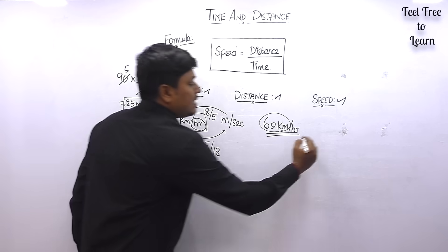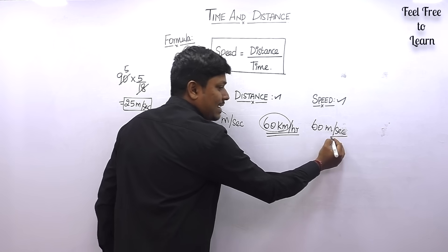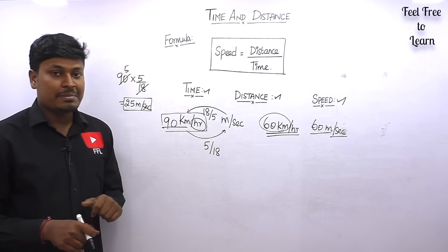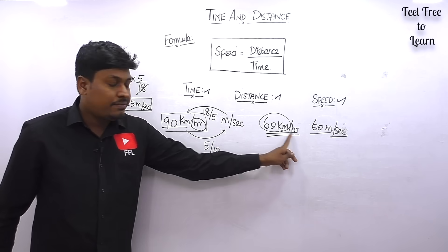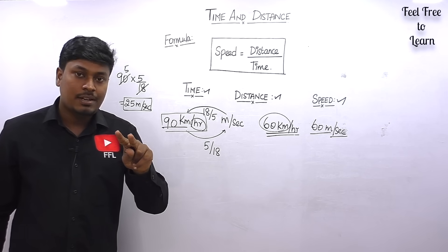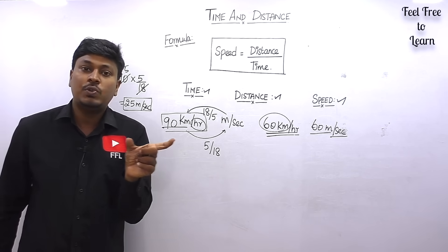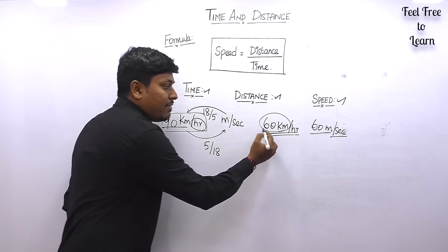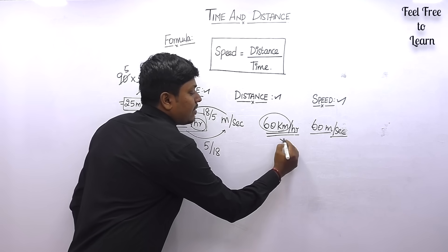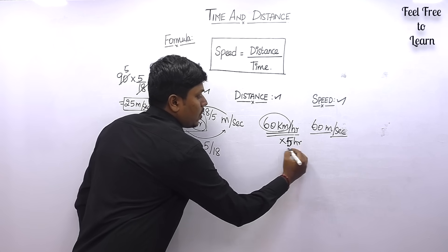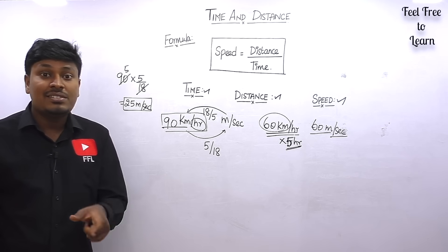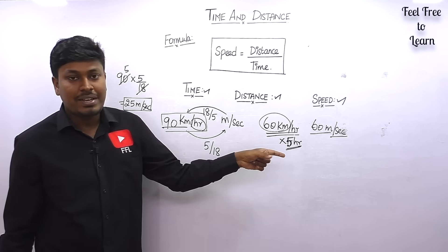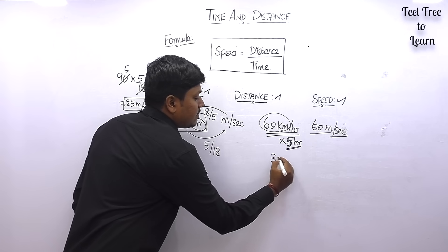If your car speed is 40 kilometers per hour and you travel for eight hours, the total distance is 40 × 8 = 320 kilometers. You can directly multiply speed by time to get distance. For example, if you travel at 60 km/hr for five hours, multiply 60 × 5 = 300 kilometers. You don't need to add up hour by hour — just use the formula directly.